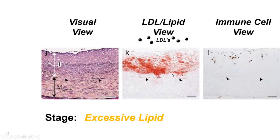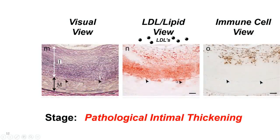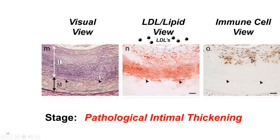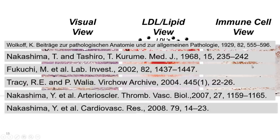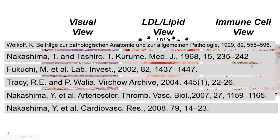At the excessive lipid stage — more advanced — you've got pathological intimal thickening with pockets appearing everywhere, macrophages moving in. In pathological intimal thickening with macrophage and foam cells, the lipid has filled the intima. But it gathered originally in its earliest stage down at the base of the intima, far from the blood flow, down near the media. Many publications confirm this is how lipids build up.